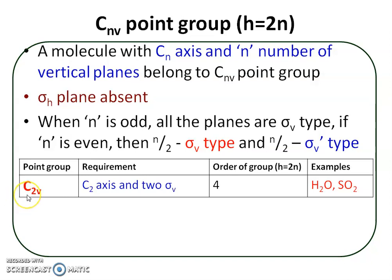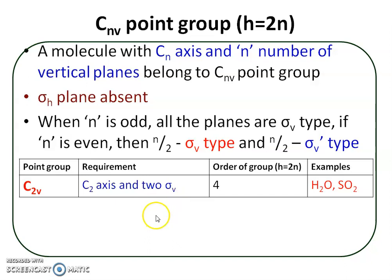In the case of the C2V point group, the requirement is there must be a C2 principal axis and two sigma V planes passing through the principal axis. Examples of this C2V point group are water and sulfur dioxide.